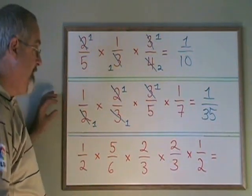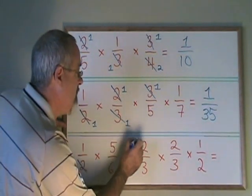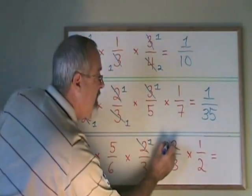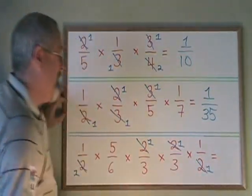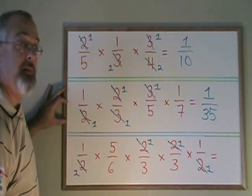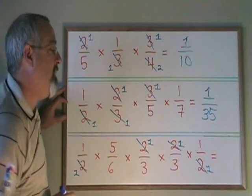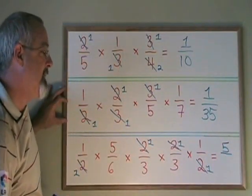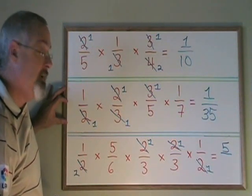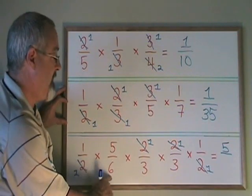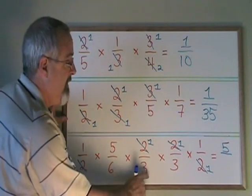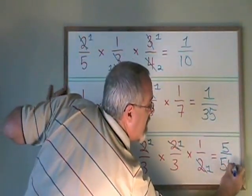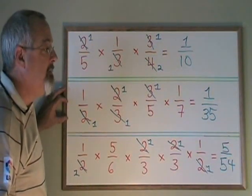The last example has five fractions. I see a 2 on the bottom that I can cancel with a 2 on the top, leaving 1s. I see another 2 on the bottom and another 2 on the top — they can be cancelled as well, leaving 1s. Now my numerators say 1 times 5 times 1 times 1 times 1, which equals 5. My bottom says 1 times 6 times 3 times 3 times 1. Taking my time: 1 times 6 is 6, 6 times 3 is 18, 18 times 3 is 54, and 54 times 1 is 54. My final answer is 5/54, and it cannot be simplified any further.